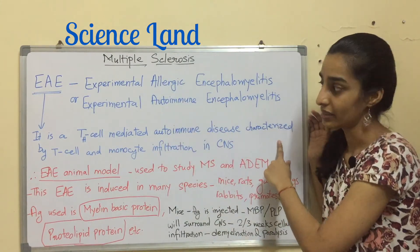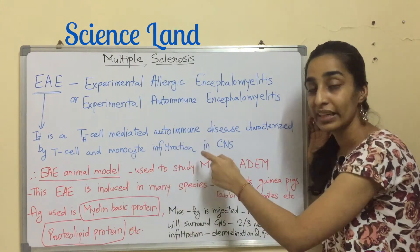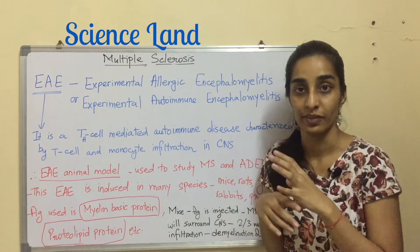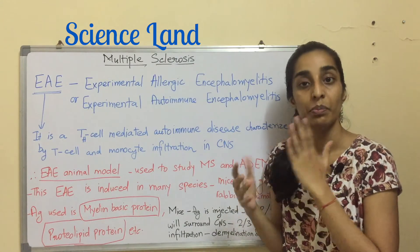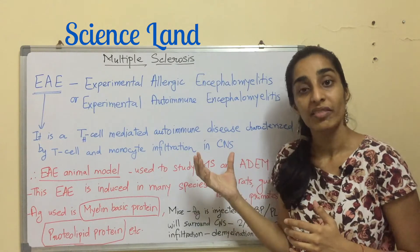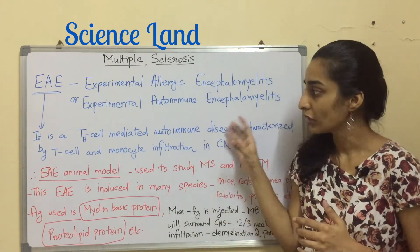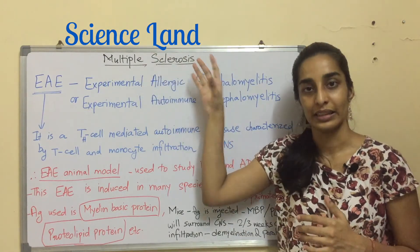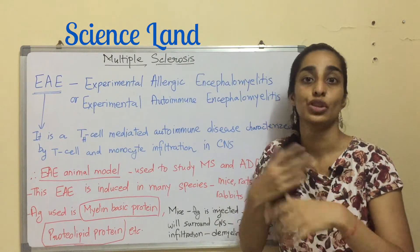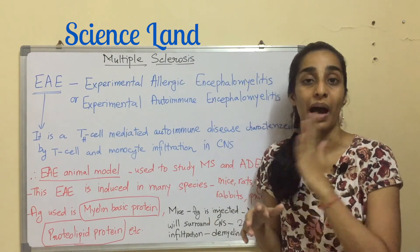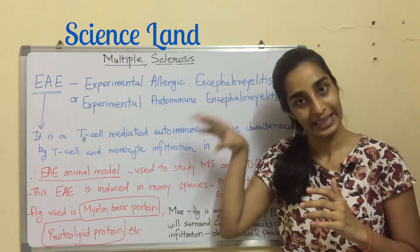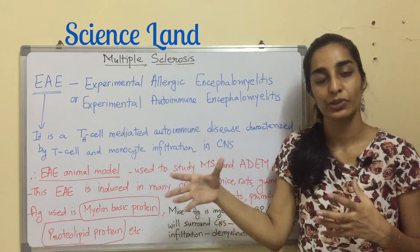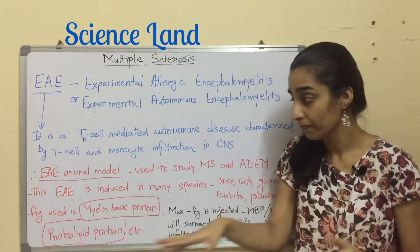EAE is characterized by T cell and monocyte infiltration in the CNS, meaning the T cells and monocytes present in the periphery of the body pass the blood-brain barrier and infiltrate the CNS. In a similar manner, in multiple sclerosis, T cells are generated in the periphery, pass the BBB, get into the CNS, and attack the myelin. So EAE is actually used to study multiple sclerosis.